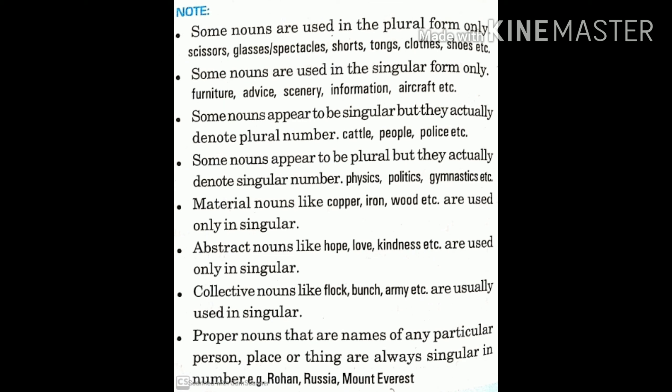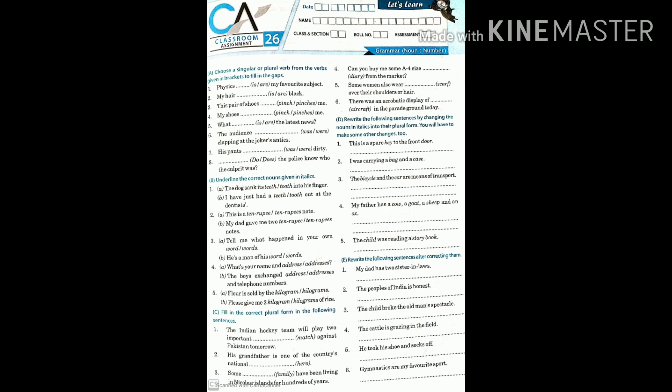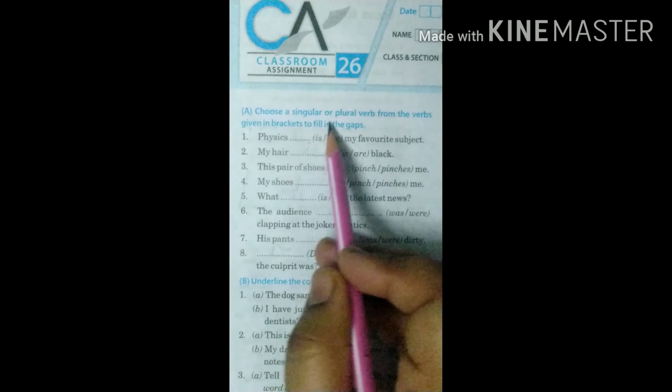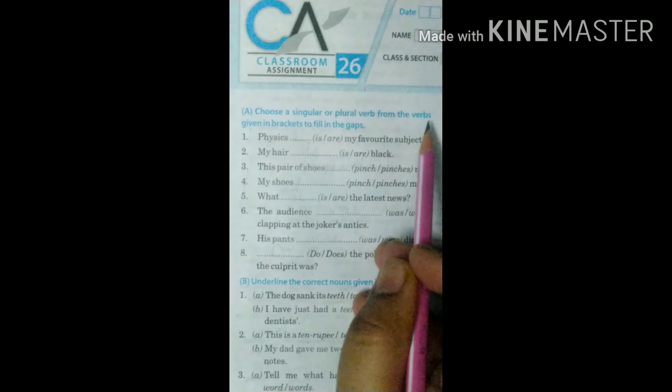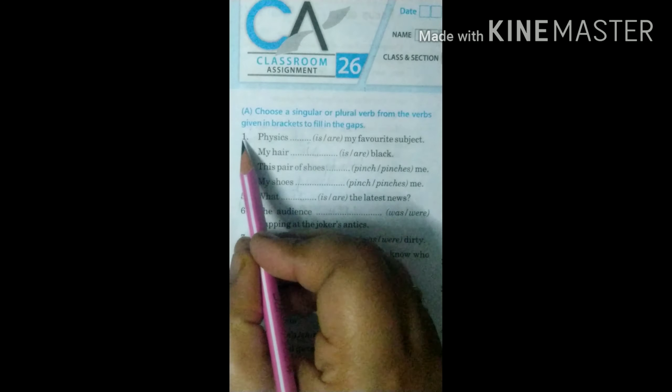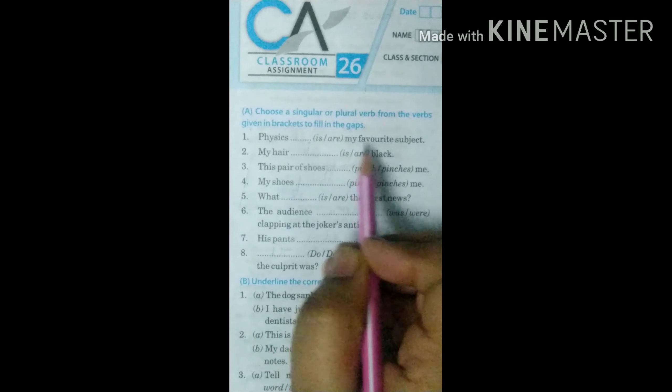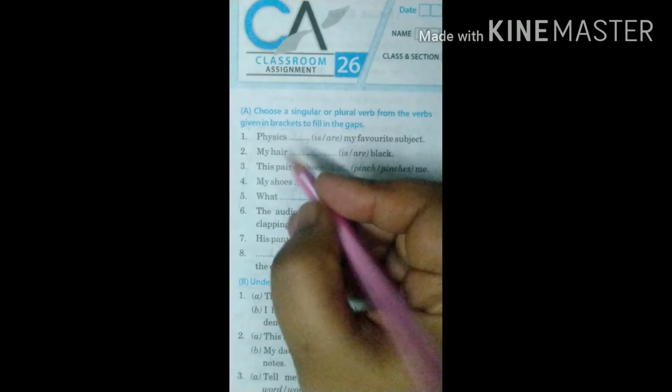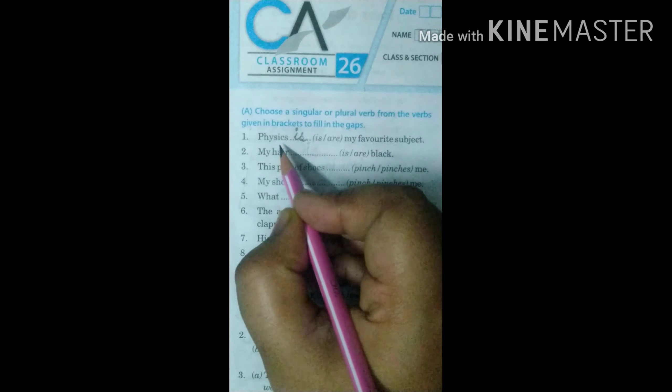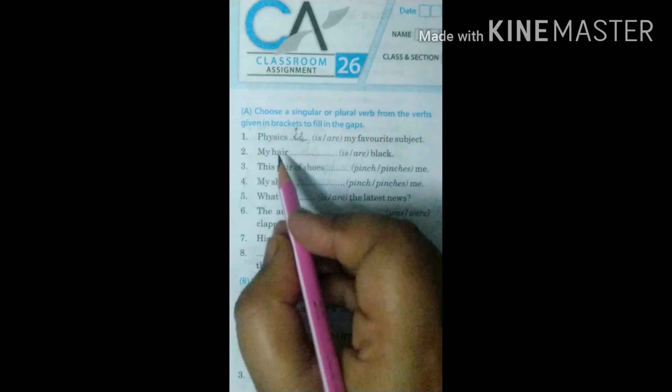Now let's see the exercise. Children, this is classroom assignment 26. Let's start. Let's do a part. Choose a singular or plural verb from the verbs given in brackets to fill in the gaps. The first is physics-my favourite subject. Physics is my favourite subject. Because it's a name of a subject. It is not plural.